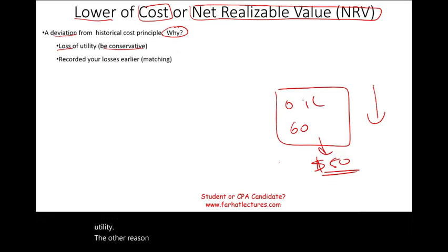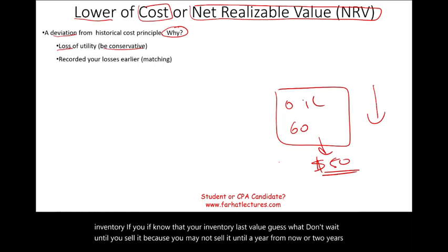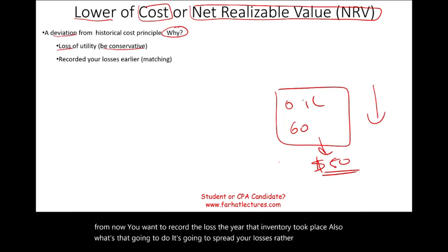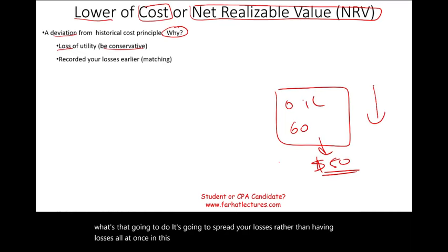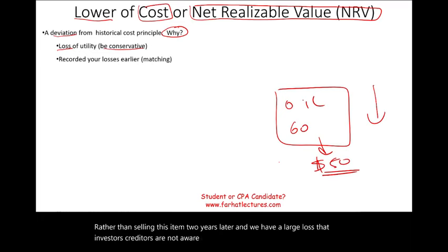The other reason is to record your losses earlier. Don't wait until you sell your inventory. If you know that your inventory lost value, don't wait — you may not sell it until a year or two from now. You want to record the loss in the year that it took place. This will spread your losses rather than having them all at once, giving a clearer picture of your company over time rather than a large surprise loss when you eventually sell the item.